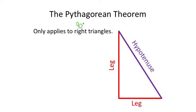Right triangles are unique, so we gave names to the side lengths of a right triangle. The two sides that make up the right angle — the 90-degree angle — are what we call the legs. The other side is called the hypotenuse.